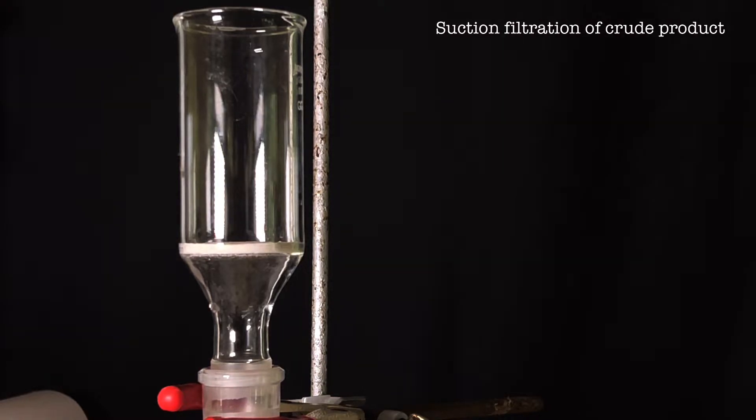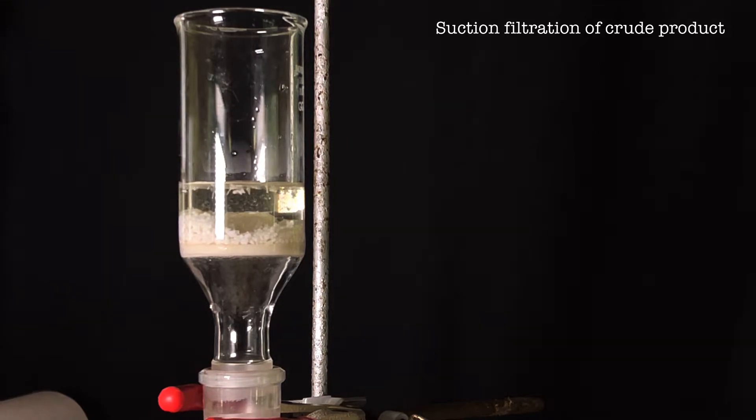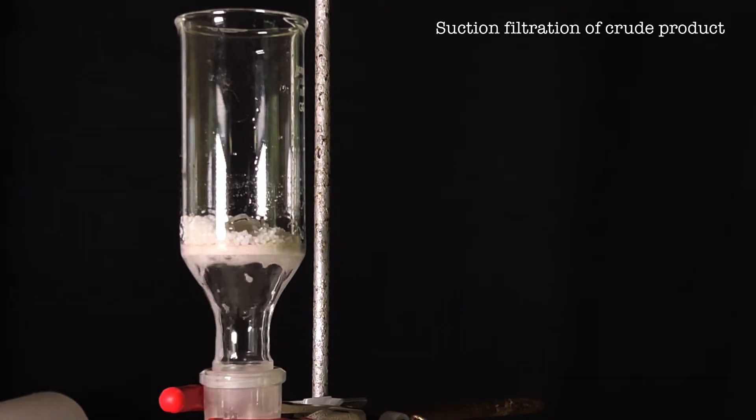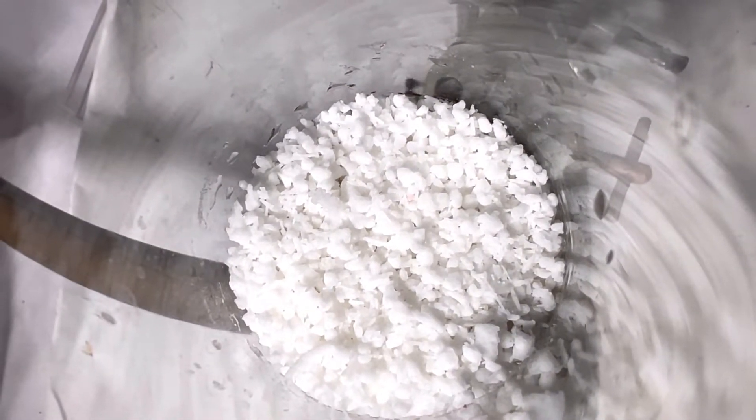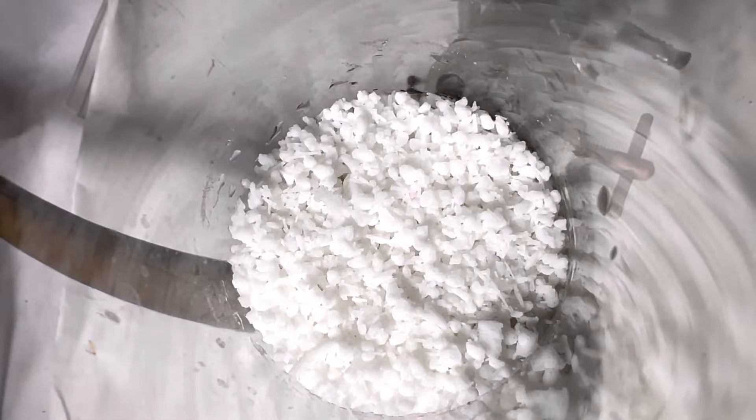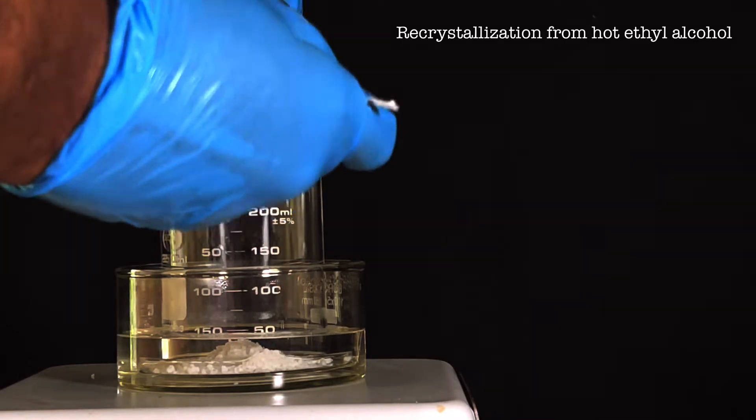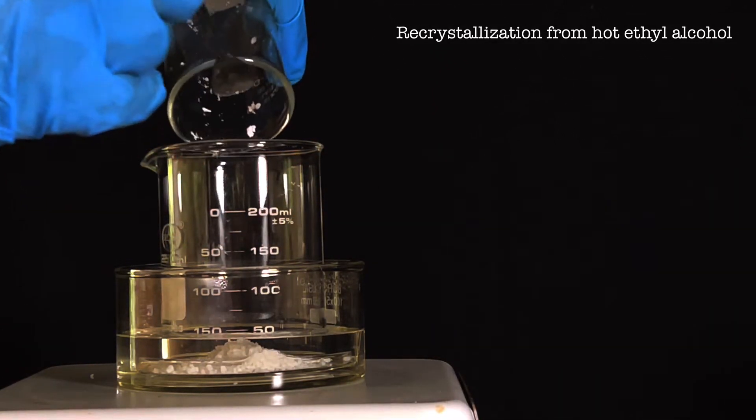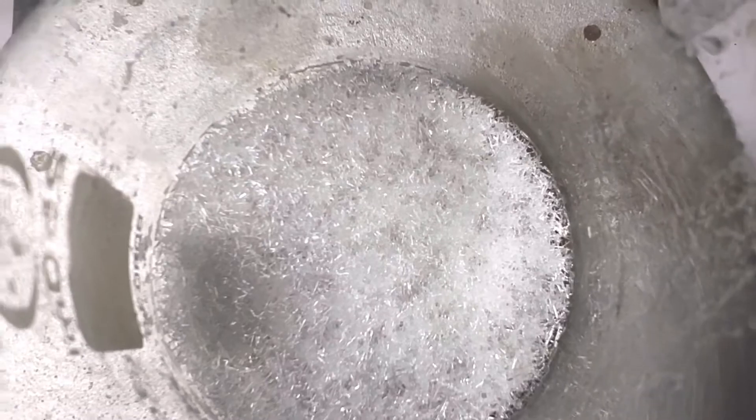After 20 minutes, the product formed was vacuum filtered. This is the crude product after letting it dry by using the vacuum pump. Next, the compound was recrystallized from hot 96% ethanol solution. On cooling down, needle-shaped crystals of phenyl benzoate were formed.